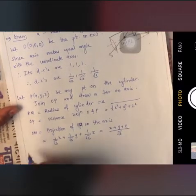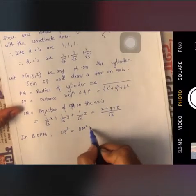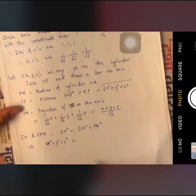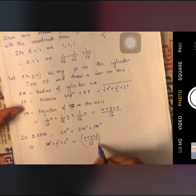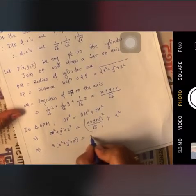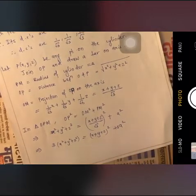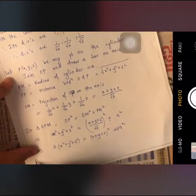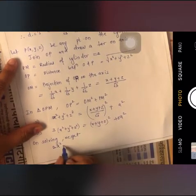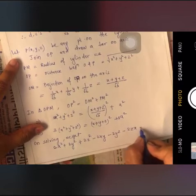In triangle OPM, using the Pythagorean theorem with OP², OM², and PM², we get: x² + y² + z² = [(x + y + z)/√3]² + A². Expanding and simplifying: 2x² + 2y² + 2z² − 2xy − 2yz − 2zx = 3A².